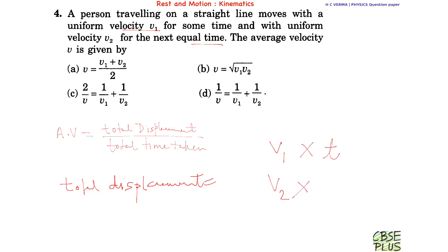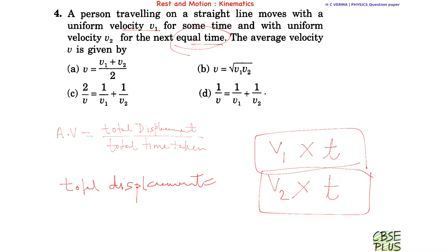The same person travels with velocity v2 for an equal time t — it is mentioned that the time is equal. So in the first chunk the person travels with v1 for time t, and in the second chunk with v2 for time t. Multiplying velocity and time gives the individual displacements, so total displacement is v1·t plus v2·t.